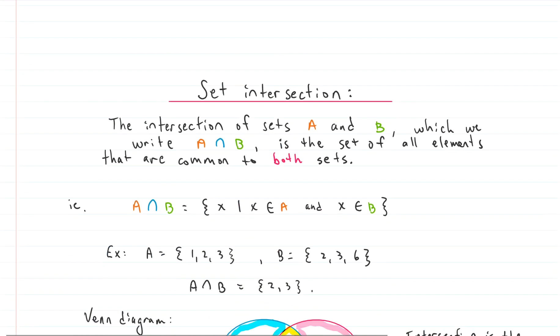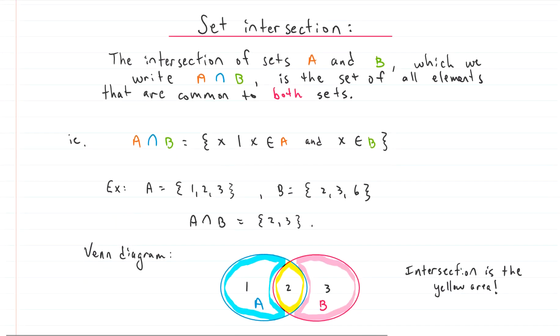Let's talk about set intersection. Set intersection is an operation you do on sets. You find their intersection. We write the intersection operator kind of like an upside down U or kind of like an N. So the intersection of sets A and B, which we would write A intersect B, or A and then this upside down U and then B, is the set of all elements that are common to both A and B.